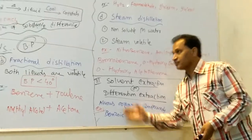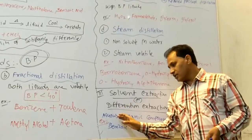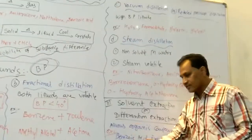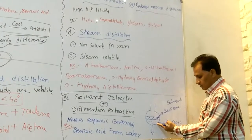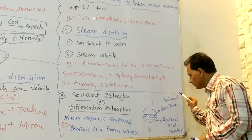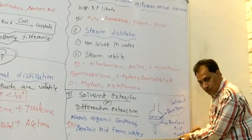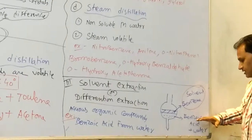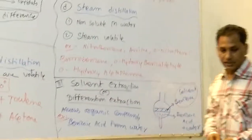Solids and liquids can also be purified by solvent extraction or differential extraction. This is used when organic compounds are mixed with water — an aqueous organic compound. For example, benzoic acid mixed with water: to separate benzoic acid from water, we add benzene as a solvent on top. Benzoic acid is immiscible with water, so they form layers. On continuously rotating the vessel, benzoic acid migrates and mixes with benzene, while water settles at the bottom. This is the solvent extraction technique.